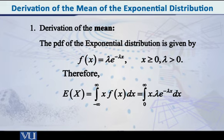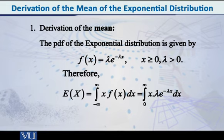Let me proceed with the derivation of the mean. For any continuous distribution, the mean is the integral from minus infinity to infinity of x times f(x) dx. But here, since the exponential distribution ranges from 0 to infinity, the expected value of x equals the integral from 0 to infinity of x times lambda times e^(-lambda*x) dx.